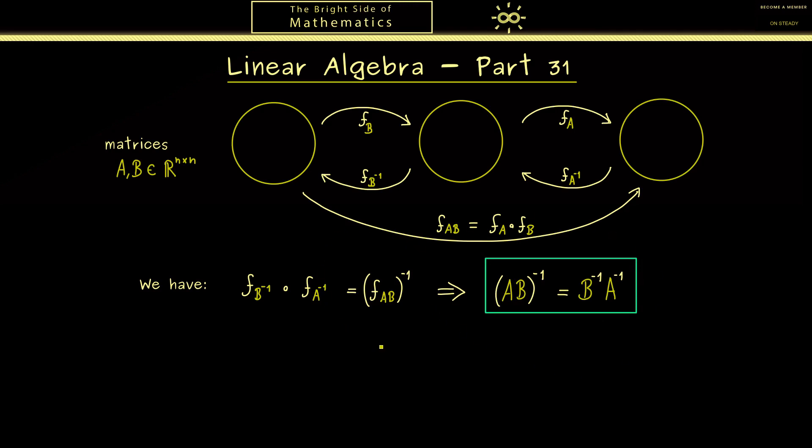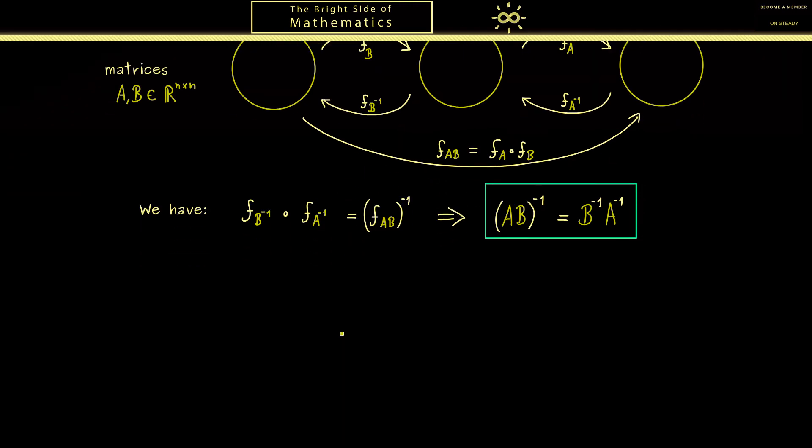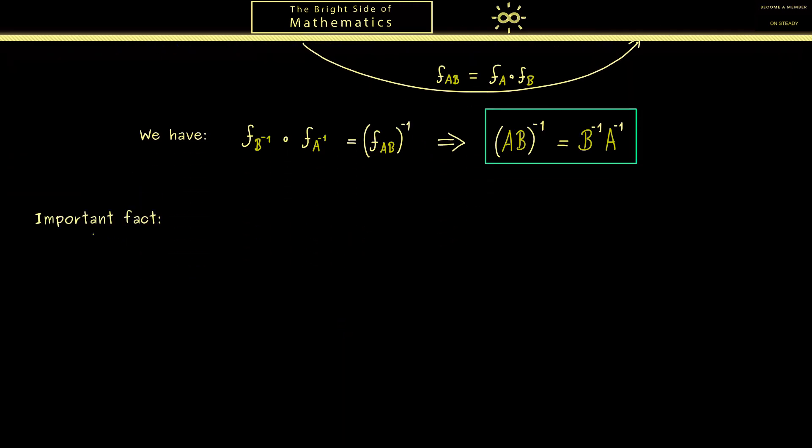Because now we want to prove that inverses of abstract linear maps are also linear. Therefore let's state that also as an important fact. So the starting point is that we have a linear map from R^n into R^n. A map is called linear if it conserves the linear structure of the vector space R^n. So it conserves the addition and the scalar multiplication.